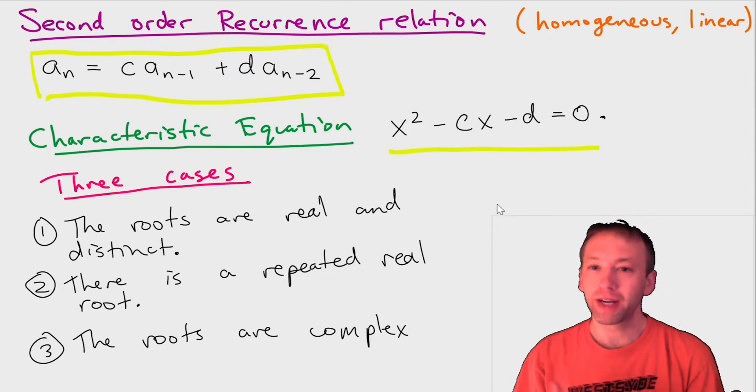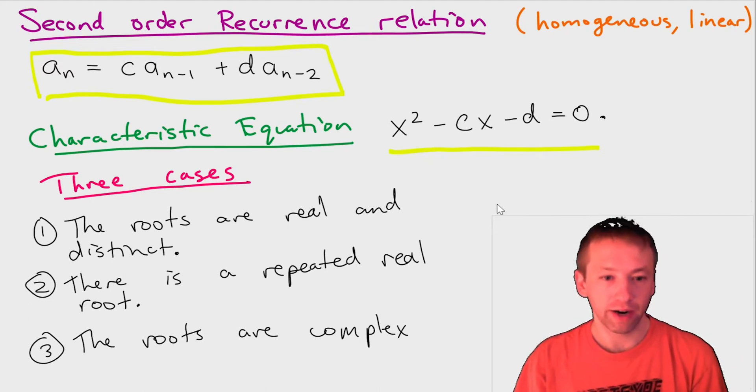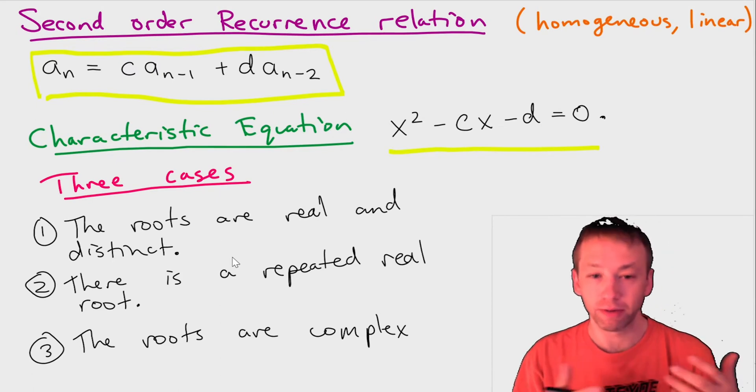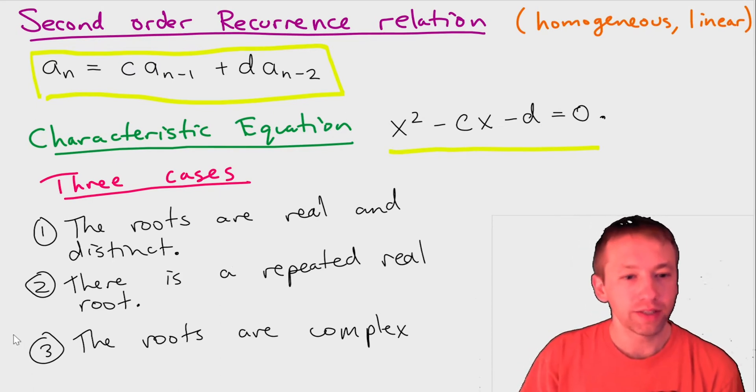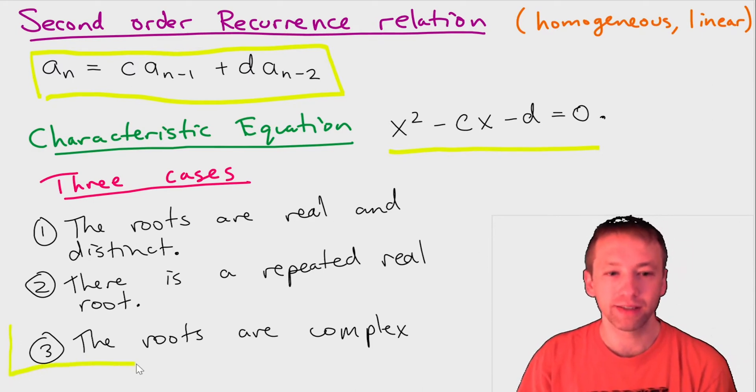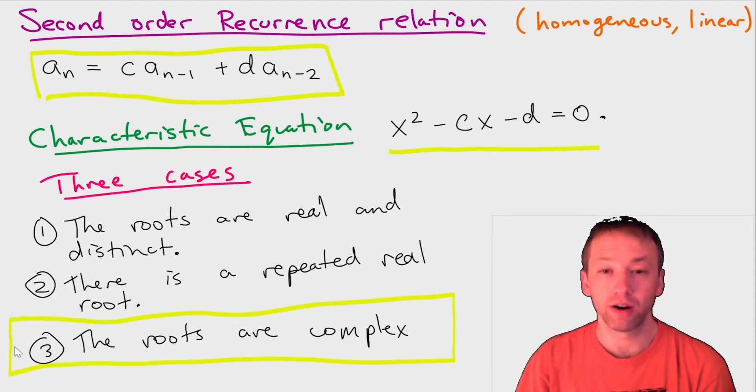And then there were three different cases depending on the roots of the characteristic equation. So the roots could be real and distinct, you could have a repeated real root, or complex roots. And the case I wanted to talk a little bit more about, so we did do some examples of this in class, but I think there's still a little bit of confusion about this, and that's the case where the roots are complex.